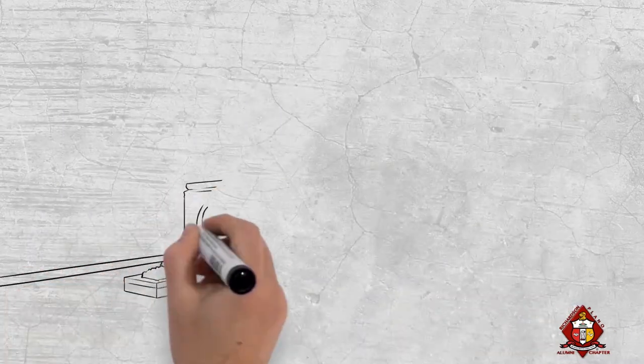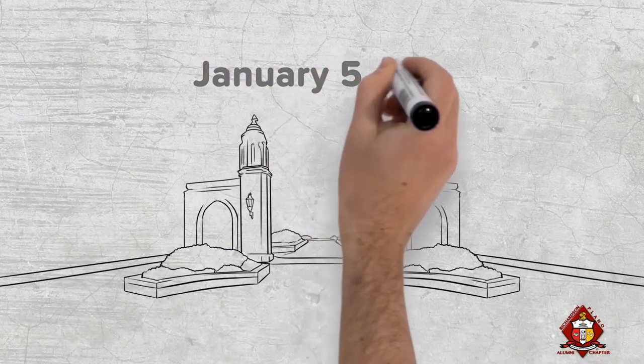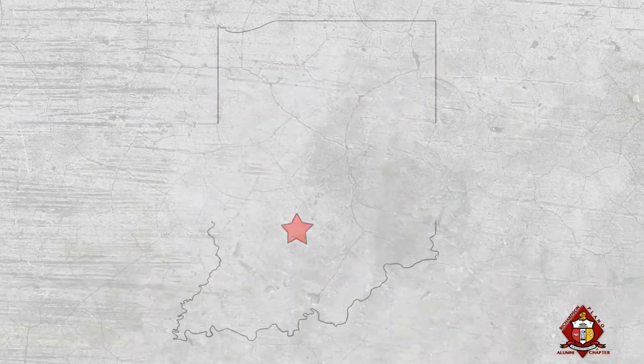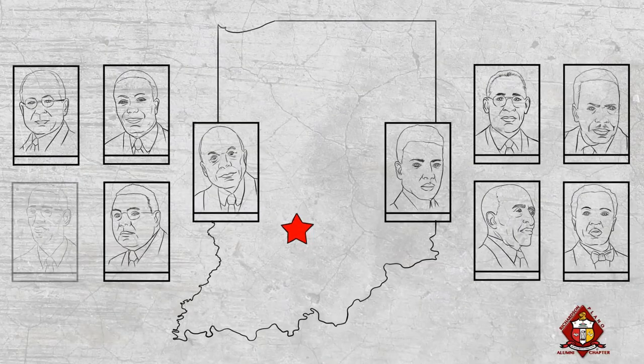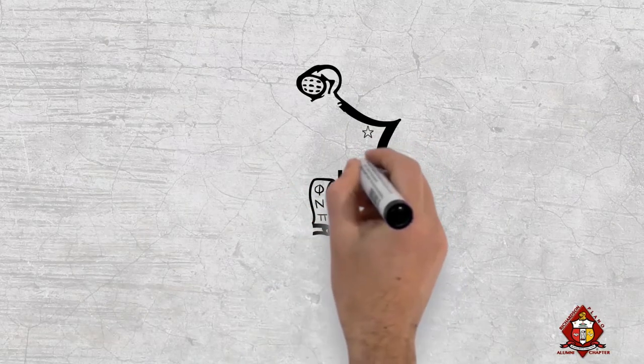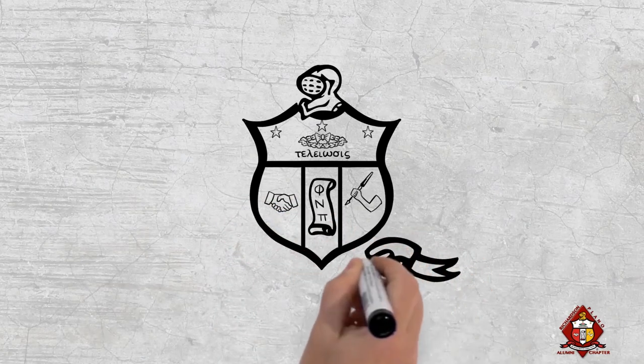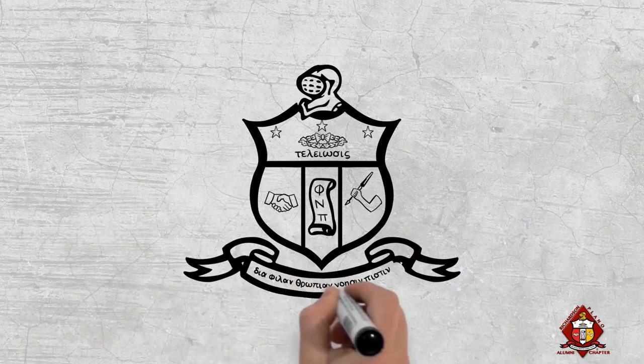It was the vision of these astute men that enabled them on the night of January 5, 1911, on the campus of Indiana University at Bloomington, to sow the seed of a fraternal tree whose fruit is available to and now enjoyed by college men everywhere, regardless of their color, religion, or national origin.